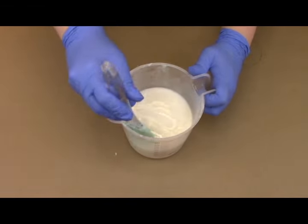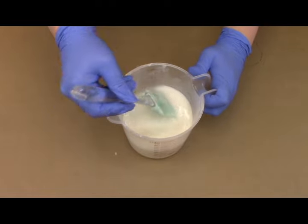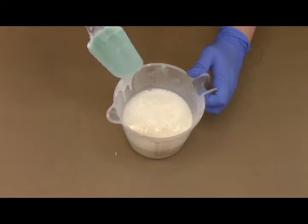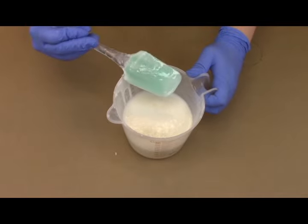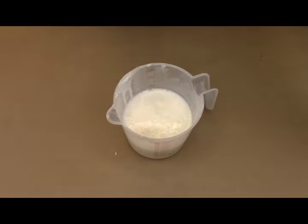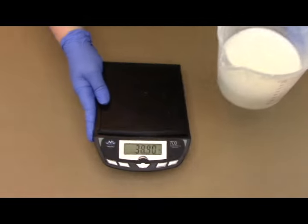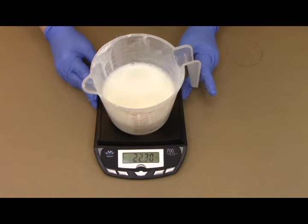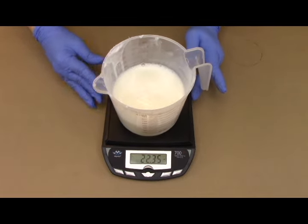Okay, so now you can see that my soap base is completely liquid. There's not any big chunks in there or anything like that. So we are ready to add our fragrance oil. Now you want to make sure you choose a skin safe fragrance oil. Like I said, one that has a low vanillin content would be best just so it keeps the soap from discoloring.